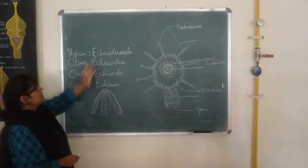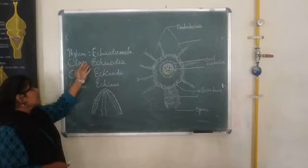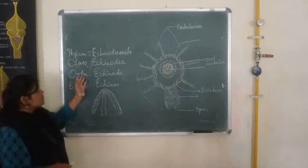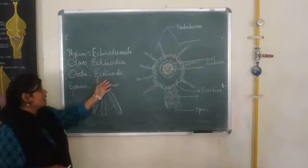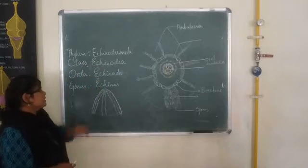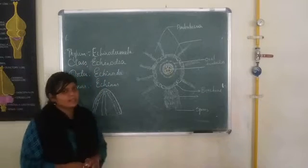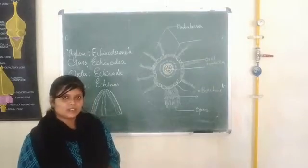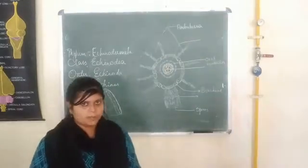Phylum Echinodermata, class Echinoidea, order Echinoidum, and the genus and species is Echinus — commonly called sea urchins.